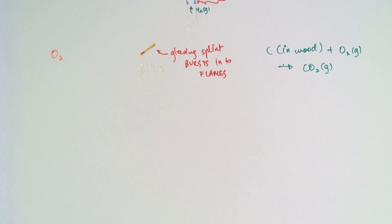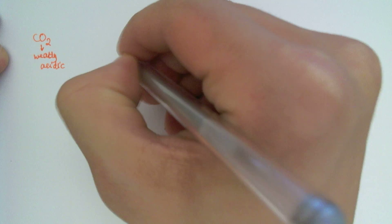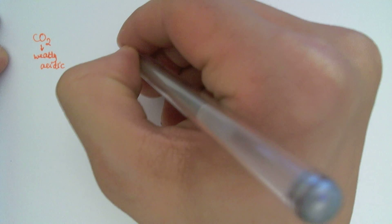The next gas we're taking a look at is carbon dioxide. Carbon dioxide is a weakly acidic gas and what it will do is it will turn lime water milky white. So you will take your test tube where the reaction is taking place.